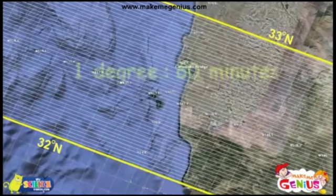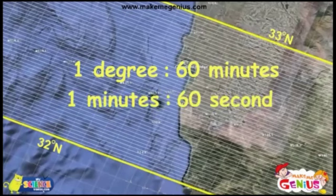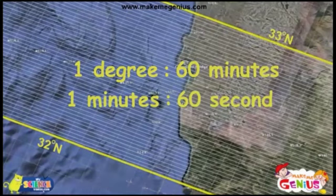These 69 miles is 1 degree. Each degree is further divided into smaller lines. There are 60 minutes in 1 degree and 60 seconds in 1 minute.